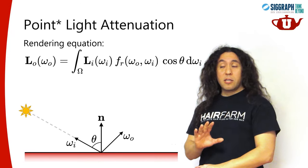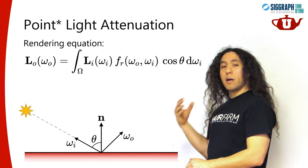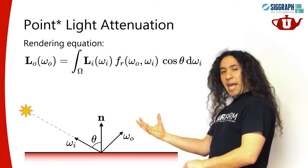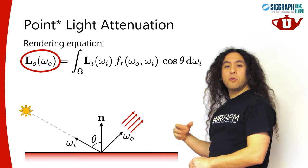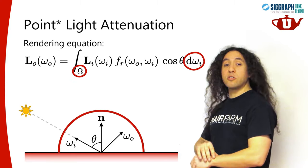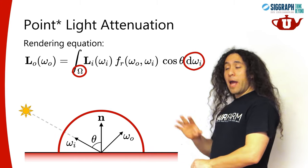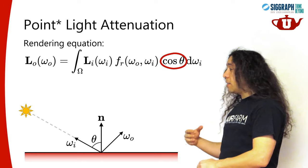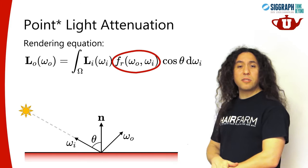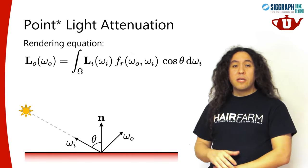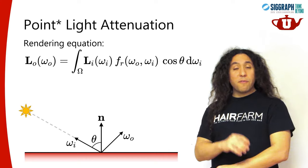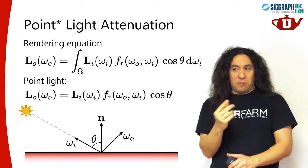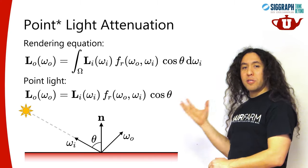We're going to start with the rendering equation. Here's the setup: we have some light coming to a surface, and we're going to see the reflected light off of that surface. The reflected light - the outgoing light off that surface - is going to be equal to this integral over the entire hemisphere. For any direction where some light is coming from, we multiply the incoming light with the geometric term and then with the surface BRDF that defines the material properties, and that's how we get the outgoing light. For a point light, this equation simplifies quite a bit because we have only one direction where the light is coming from, so the integral collapses into a simpler form.